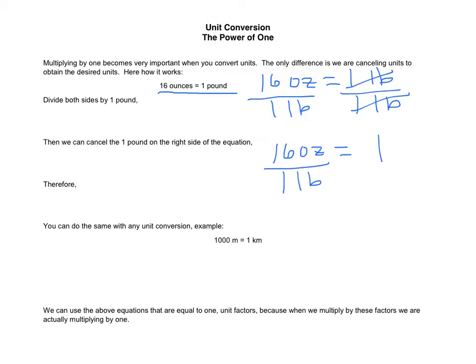We could have divided by 16 ounces instead of 1 pound, and that would give us 1 pound divided by 16 ounces equals 1. So we can divide either way based on what units we're wanting to convert from. If we're trying to convert from pounds to ounces, we use 16 ounces over 1 pound. If we're converting ounces to pounds, we use 1 pound over 16 ounces.